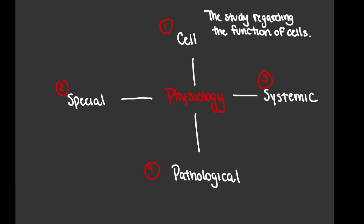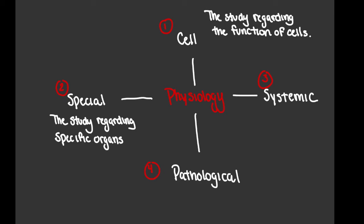Special physiology is not quite so obvious. When we talk about special physiology, we are referring to the study regarding the function of specific organs. For example, if we study the heart, we'd refer to that as cardiac physiology. We could also study the function of the kidneys — and rather than calling it kidney physiology, we use the anatomically correct term: renal physiology.